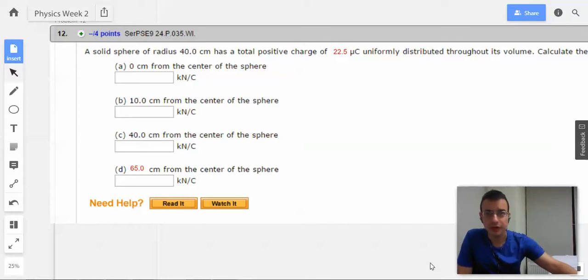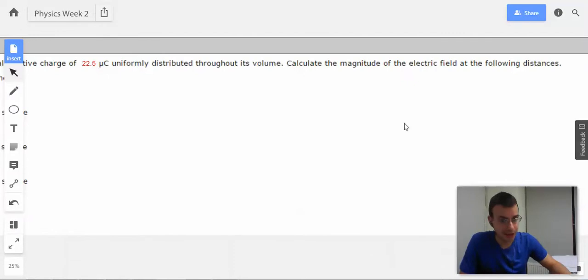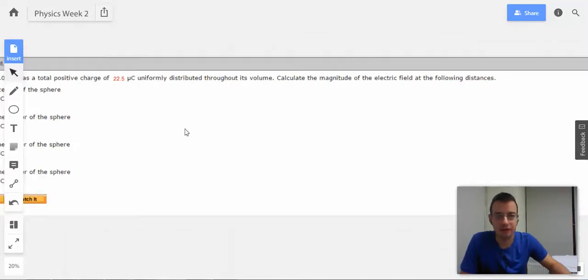Problem 12. A solid sphere radius 40 centimeters has a total positive charge of 22.5 microcoulombs uniformly distributed throughout its volume. Calculate the magnitude of the electric field at the following distances.